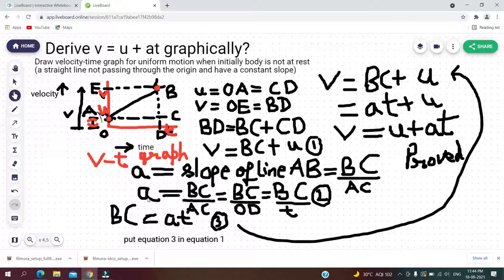So we can say that a is equal to slope of line AB is equal to BC upon AC, or AC, as AC and